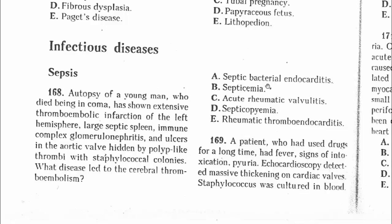The answer is septic bacterial endocarditis. According to the clinical morphological terms of sepsis, we have septicemia, septicopiemia, septic endocarditis, and chronic septicemia. Septicemia is characterized by toxicosis — high temperature and delirium — and absence of purulent metastases. Septic bacterial endocarditis is characterized by lesions of the valves of the heart. The answer for question 168 is septic bacterial endocarditis.